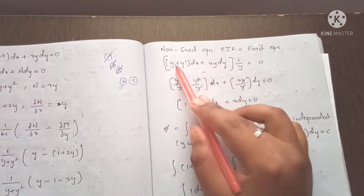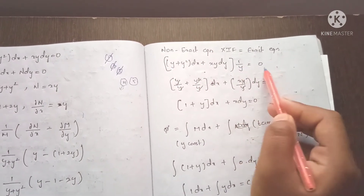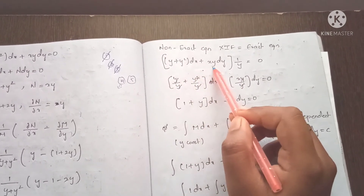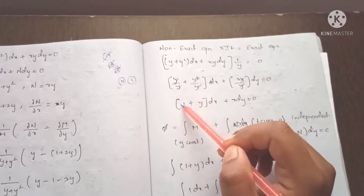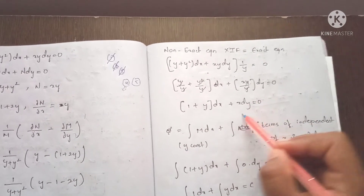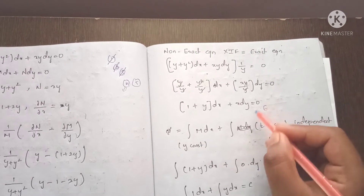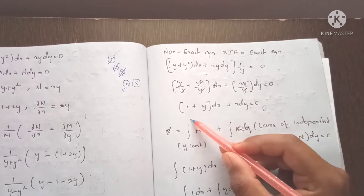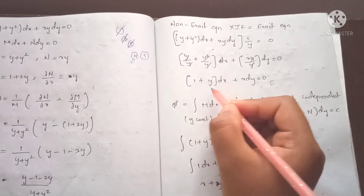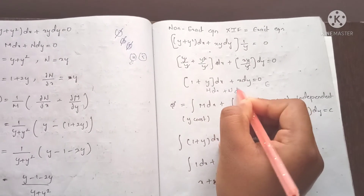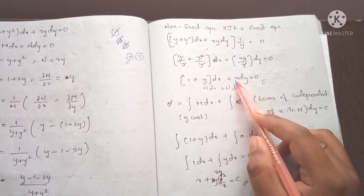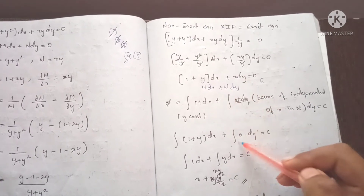Multiplying the non-exact differential equation by 1 by y: we get y by y plus y squared by y into dx plus xy by y into dy equals to 0. After cancellation, y terms cancel, giving 1 plus y into dx plus x into dy equals to 0. This is now an exact differential equation.